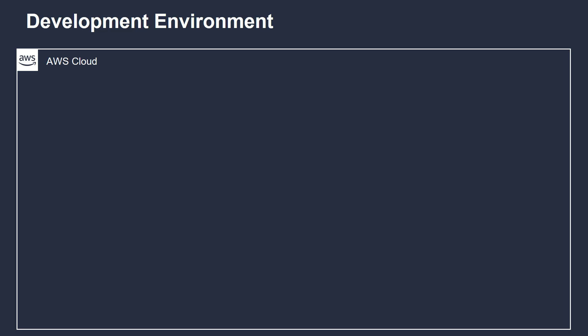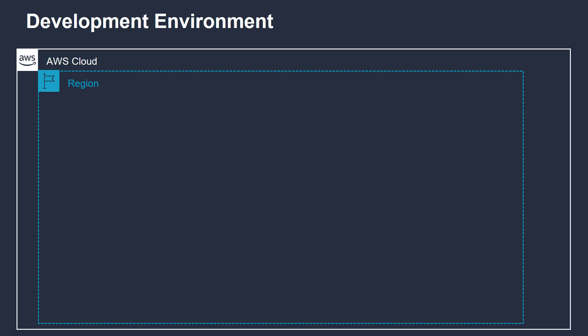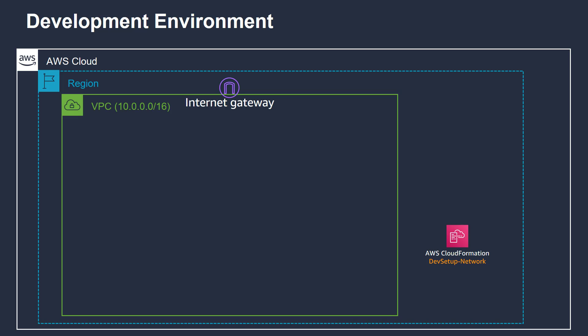So let's now explore the architecture. In the AWS account, I select a region — in this demo, I select Sydney region. I'm going to provision a simple CloudFormation template called DevSetup-Network. This CloudFormation template will provision a Virtual Private Cloud with the CIDR block 10.0.0.0/16.